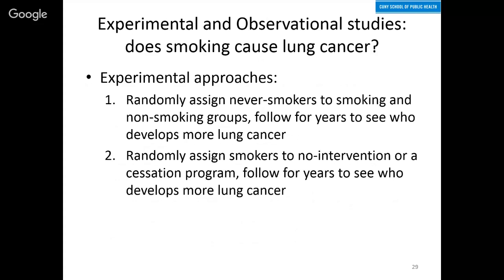An alternative experimental approach could be to take smokers and assign them to no intervention or to a cessation program, then follow them for years to see who develops more lung cancer. That, of course, is going to have an element of observation to it unless your cessation program has 100% efficacy and everyone in the smoking group continues to smoke. So in many important public health questions, there has to be an element of observational study for practical and ethical reasons.